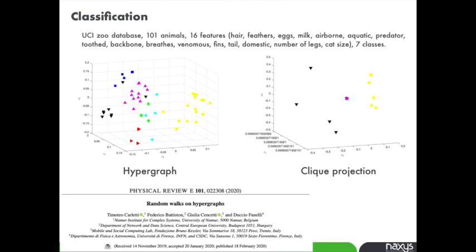To conclude, let me propose two applications of this random walk process on hypergraphs. The first one is classification. Here, the hypergraph is the UCI zoo database where you have 100 animals as nodes. Each animal has 16 possible features that are hyperedges. The idea is to recognize among these 100 animals the seven classes: mammals, fish, and so on.